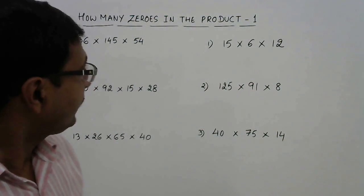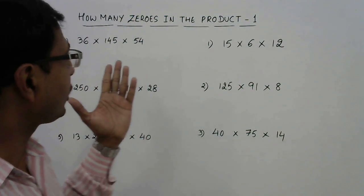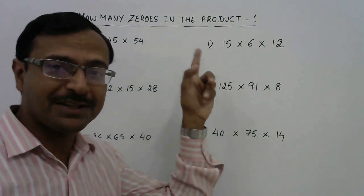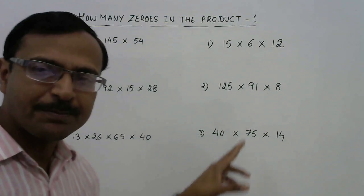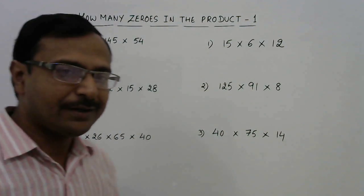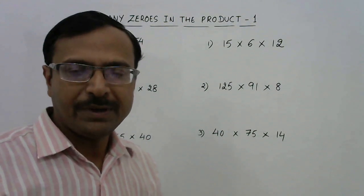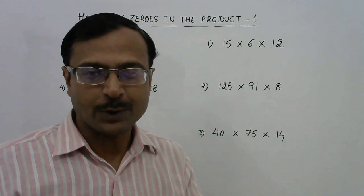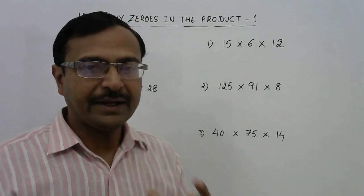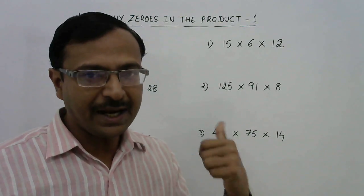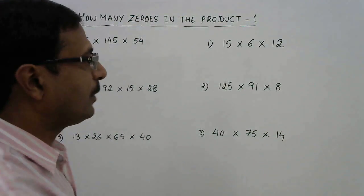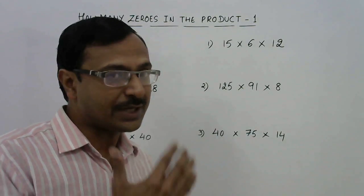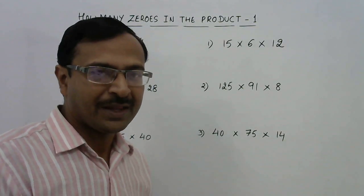Hello friends! Another very important concept for competitive exams: how many zeros in a product? I have written some products here, and the question usually asked in competitions is how many zeros will come in this product — that is, in the final answer, how many zeros do you find at the end of the number. If you multiply all these numbers, there may be one, two, or three zeros at the end.